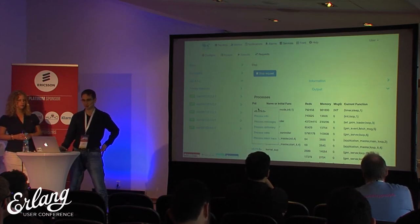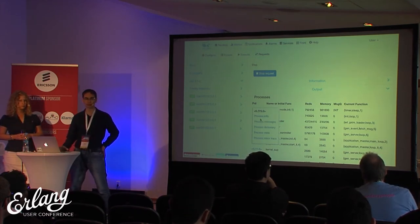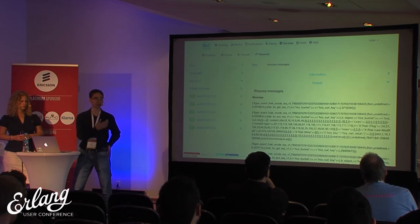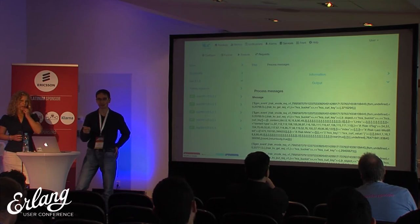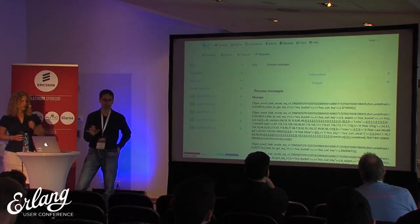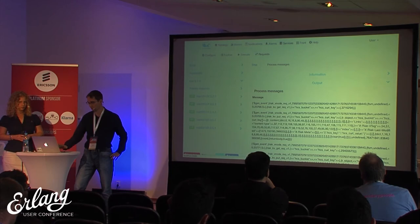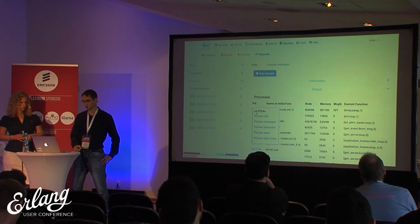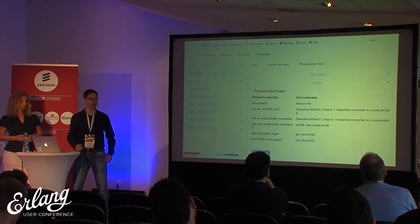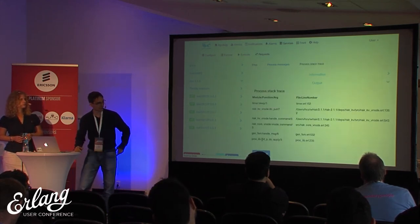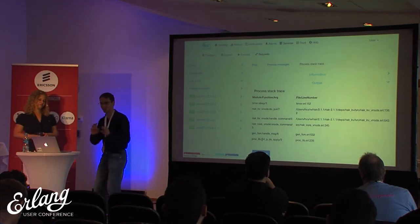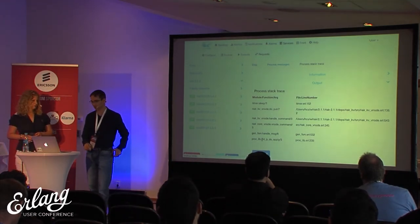If you'd like more information about a process, you can click on the ID and get info, messages, dictionary, state, and stack trace. For example, process messages shows only the first 10 messages in the queue — we don't want to overload the node. And if you're wondering what the process is doing right now, you can look at the stack trace. You can see the process is doing a do-put and actually a sleep, because we tinkered with it a bit so it would have that long queue.